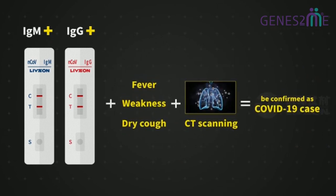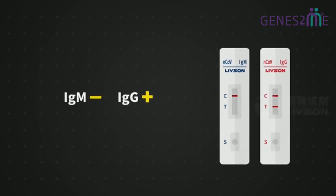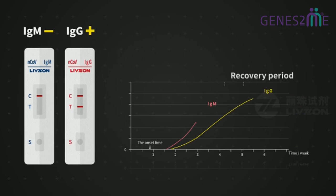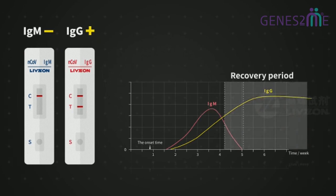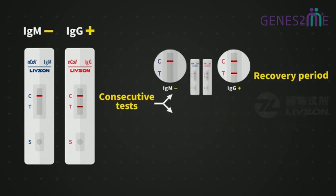When IgM negative and IgG positive, it might be a past infection case who has got recovered or a late infection case who is getting recovery. IgM disappears and IgG remains positive.